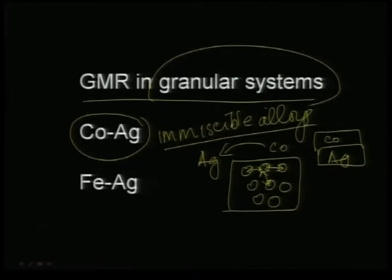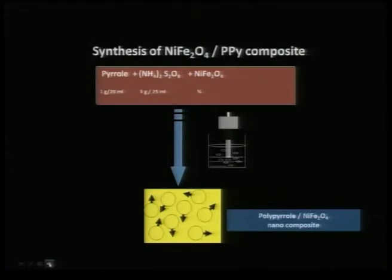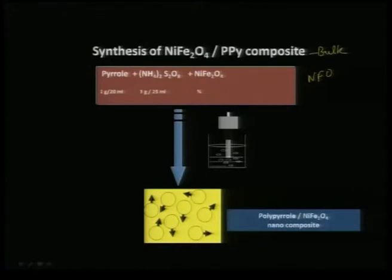One drawback of the granular system is that field sensitivity is less; you can also achieve that using iron and silver. One can make several such composites — for example, one can work with nickel ferrite and PPY (polypyrrole). This is an example of how GMR can be seen even in bulk, because NFO (NiFe2O4) is a ferromagnetic insulator and you can try to provide the conducting pathway by coating it intimately with polypyrrole.